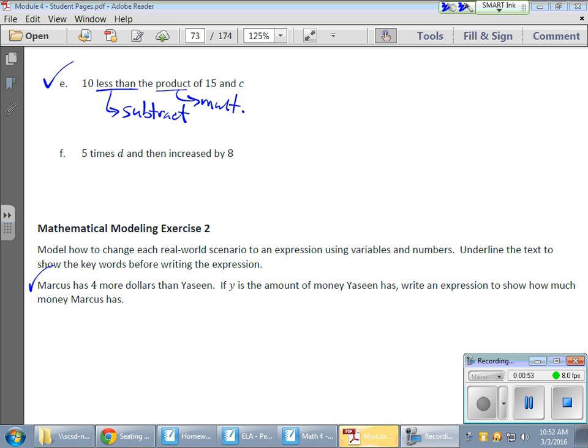10 less than, well, 10 less than lets me know that whatever I have, I'm going to need to remove 10. It's 10 less than some value. So, something like 25, or 10 less than 25, I know it's 25 minus 10. That's how I know that I need to subtract 10. Now I need to take that 10 less than the product of 15 and c. That product means I'm going to multiply that 15 and my c. So here it is, my 15 and my c as a multiplication problem, and there's my minus 10.